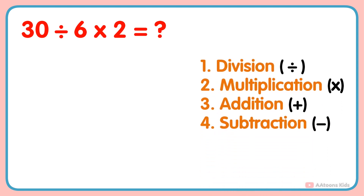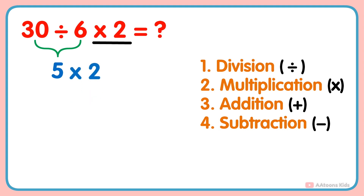What is 30 divided by 6 multiplied by 2? In this problem, two operations — division and multiplication — are given. So according to the order, we would first perform the division: 30 divided by 6 gets 5. And next, multiply 2 by the result, and you will get your answer: 5 multiplied by 2 equals 10.